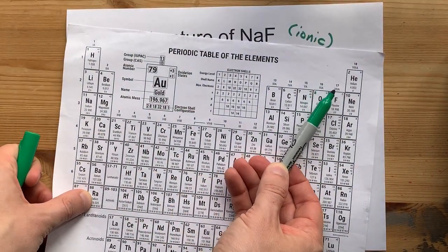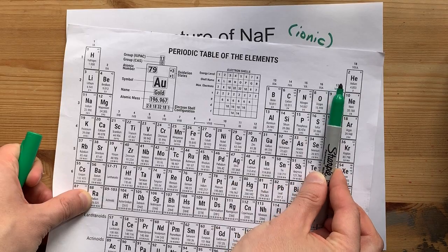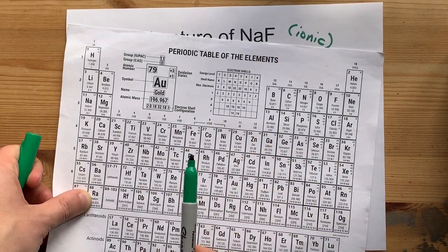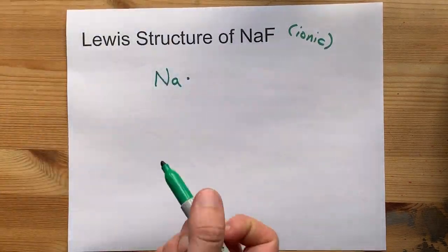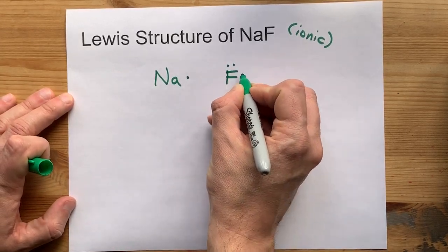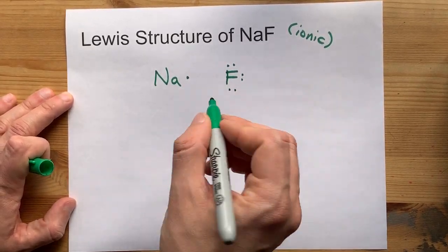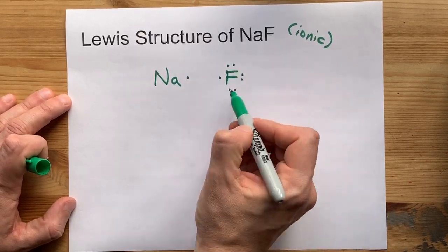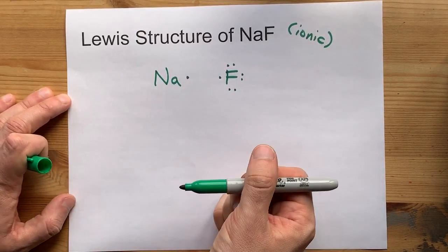Fluorine is in group 17. All of those atoms bring seven valence electrons. I remember that because all the atoms in group 17 bring seven. Get it? Seven. Bring seven valence electrons, and you have to know that.